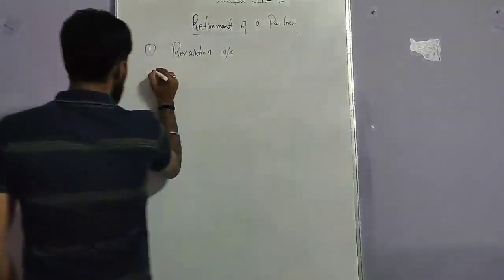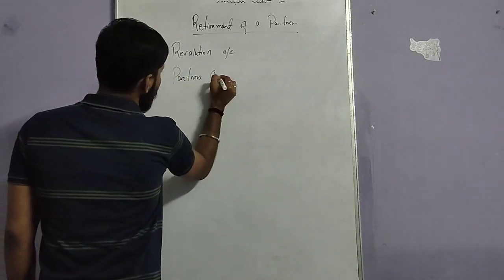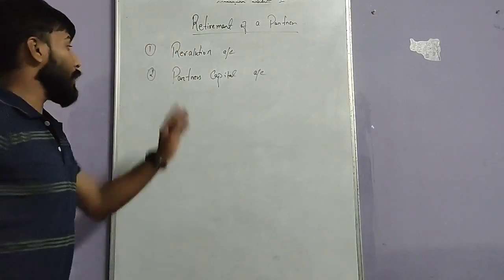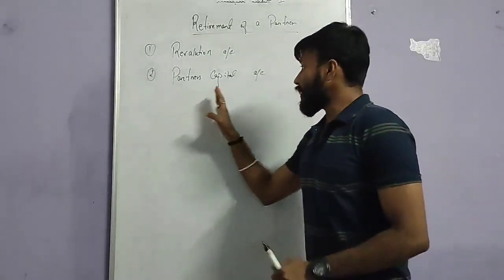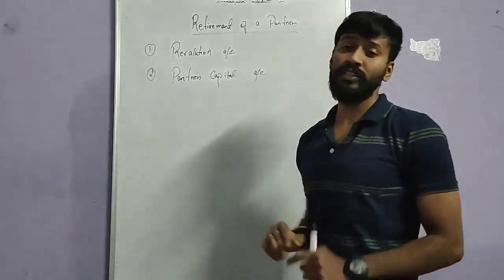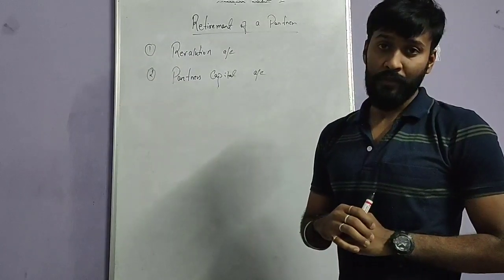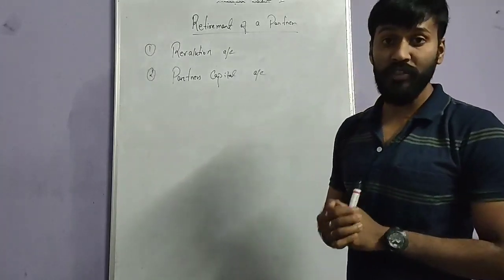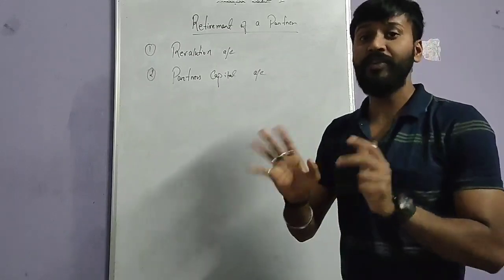The second account we need to open is the partner's capital account, same as in the admission of a partner. In this account, a partner's income, partner's profit, and partner's losses will be recorded. I will be telling you the rules — what items will be recorded on the debit side and what items on the credit side — everything I will be discussing.